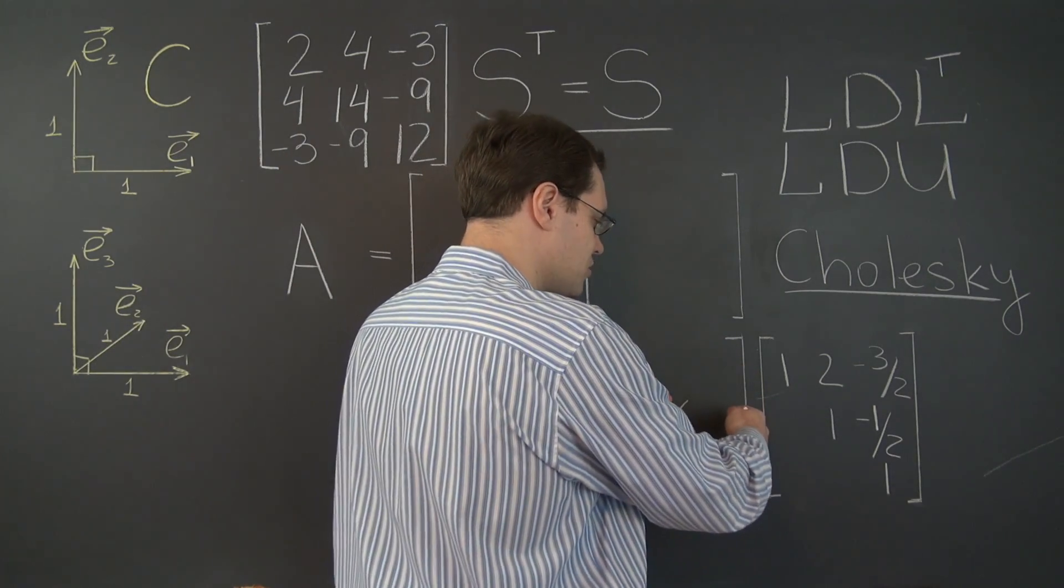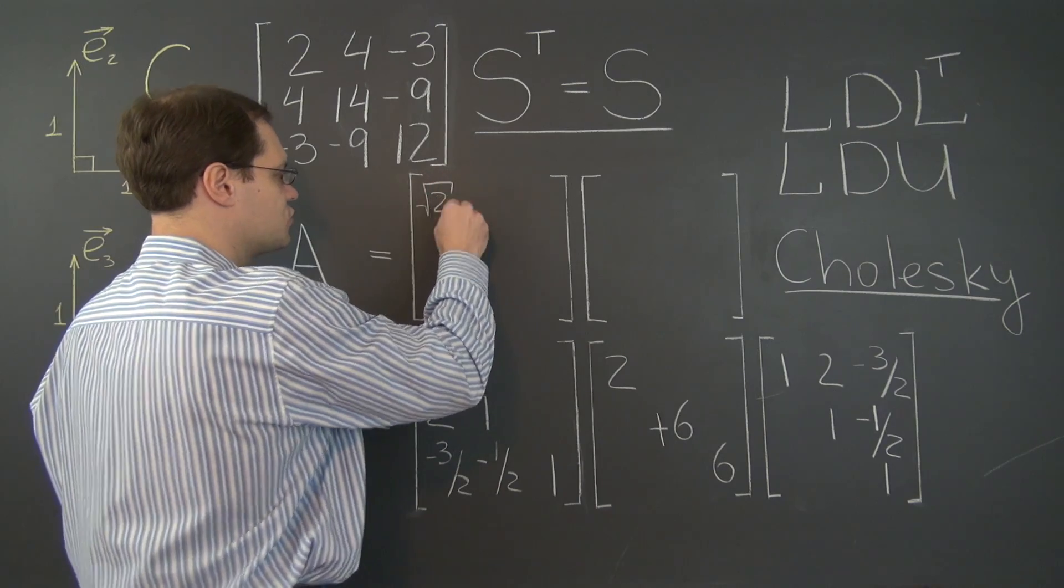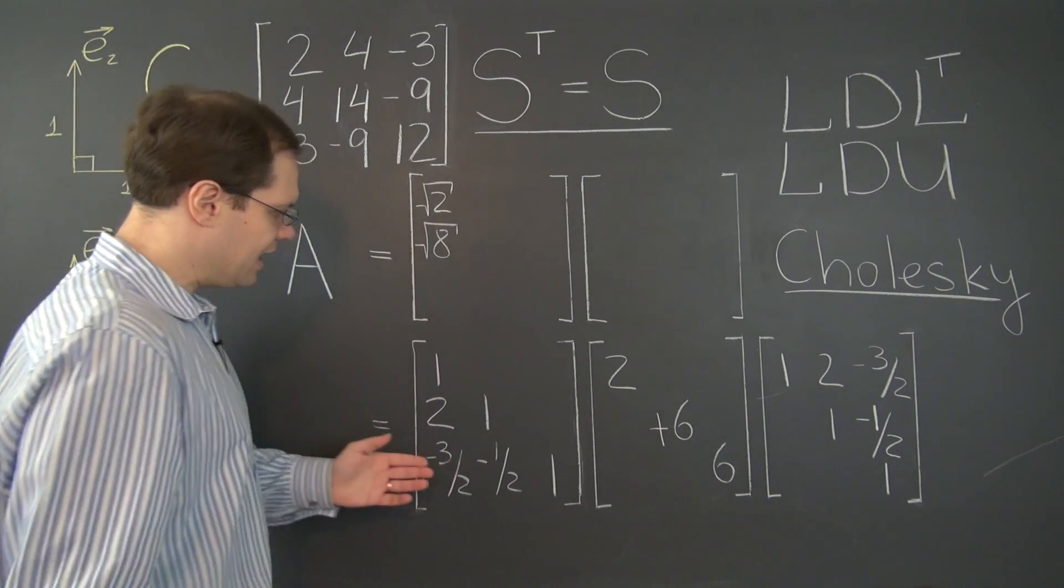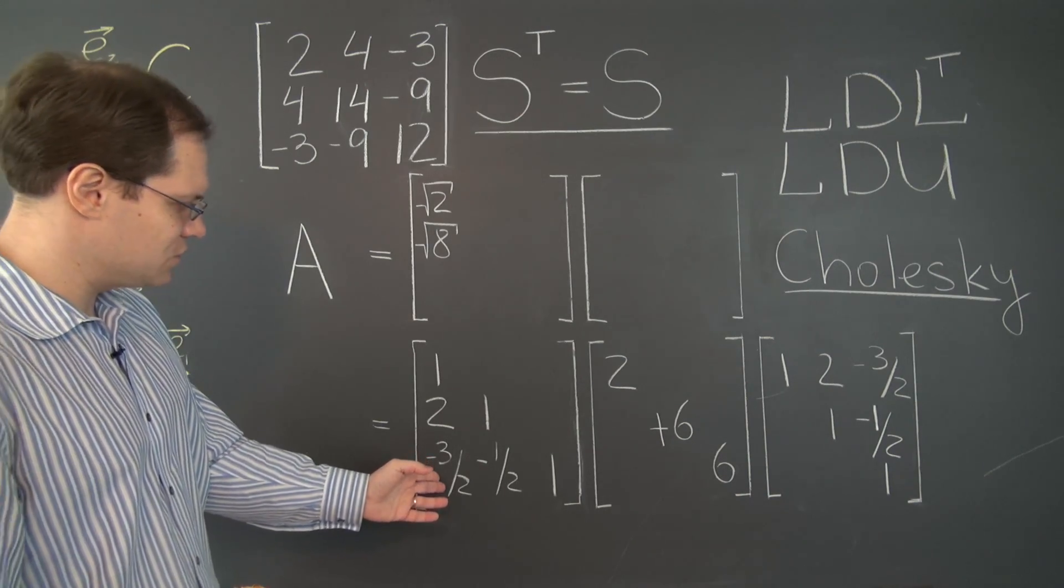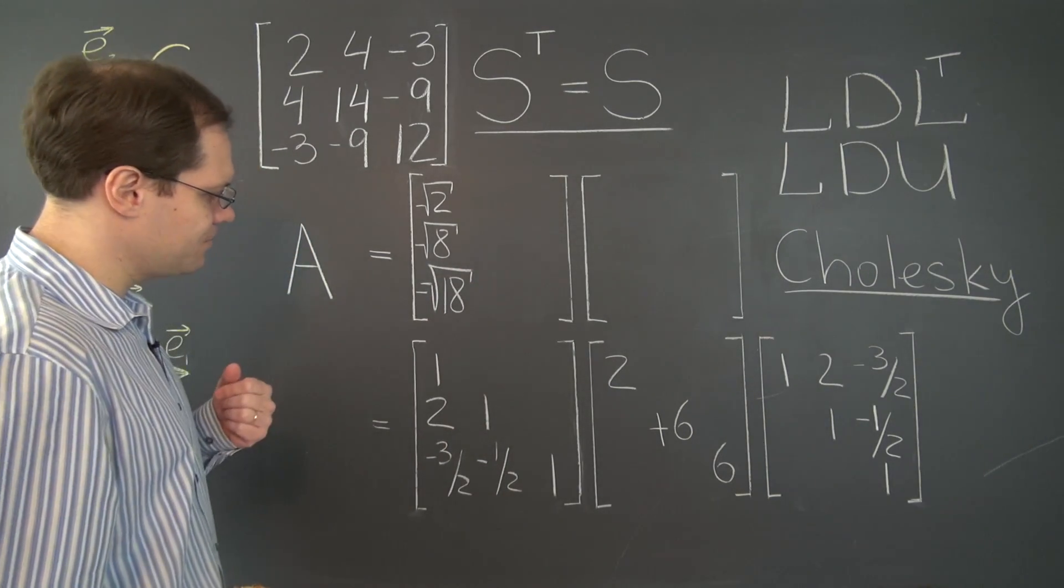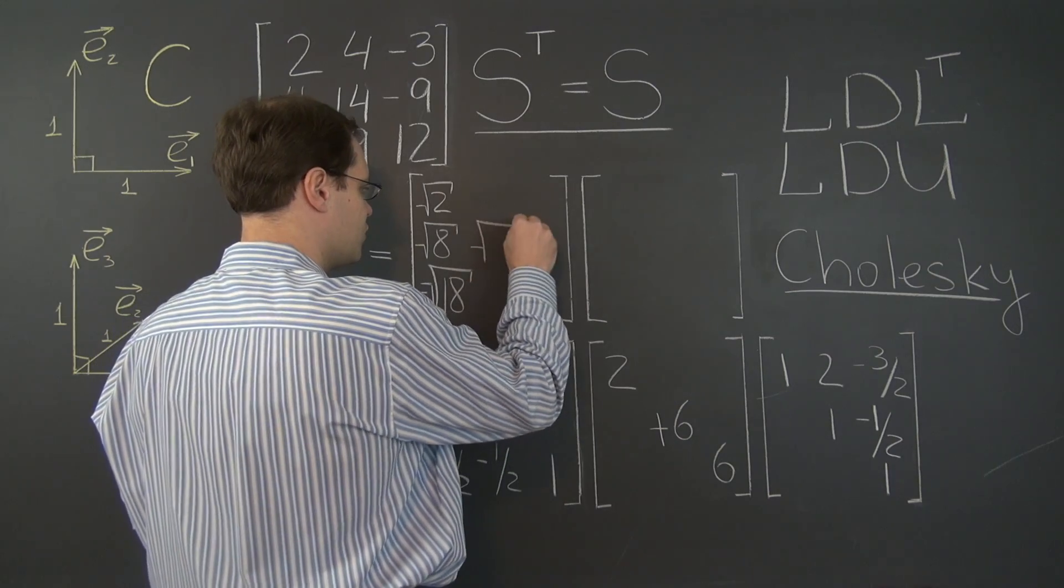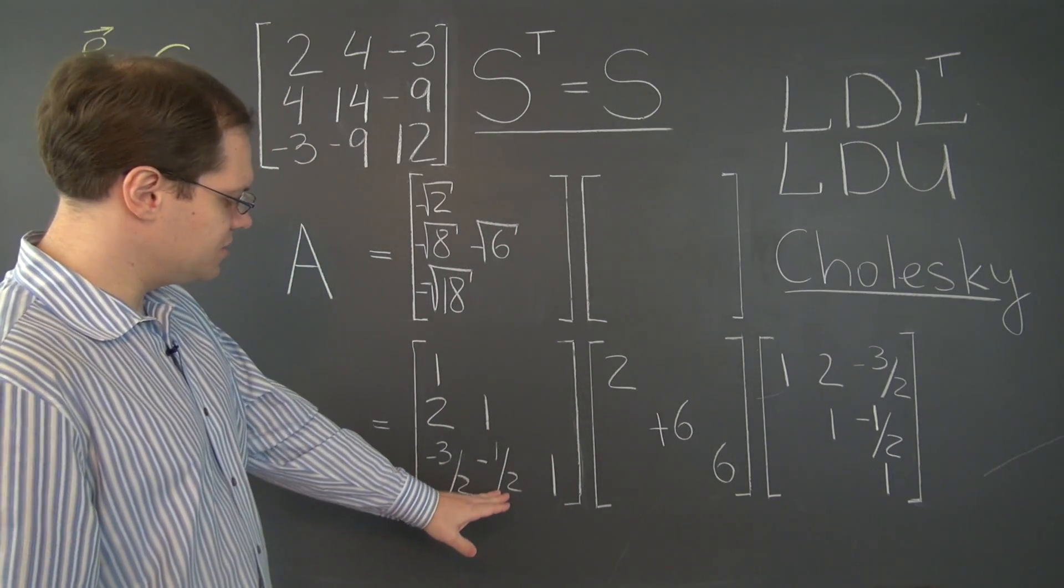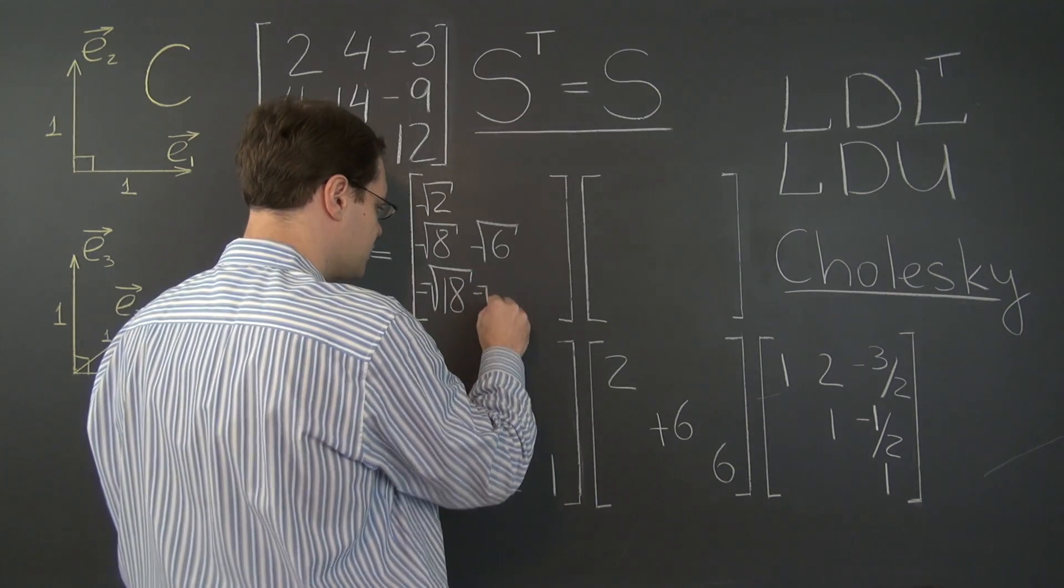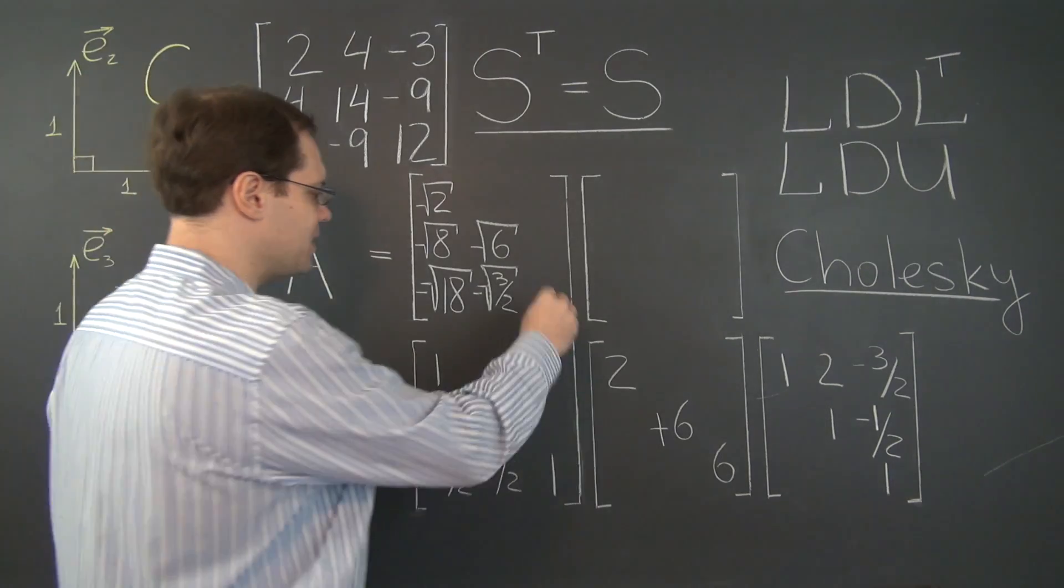And then think of what will the other matrix do to L transpose. But first, let's write down this result. So 1 becomes square root of 2. 2 becomes 2 square root of 2. So just to save space, I'll write it as square root of 8. And this becomes minus 3 square root of 2 divided by 2. So once again, just to save space, I'll write it as negative square root of 18. Same thing. Okay. Now the second column gets multiplied by square root of 6. So here we have square root of 6. And this becomes square root of 6 divided by 2, square root of 3 halves. Negative square root of 3 halves. And finally, this entry gets multiplied by square root of 6.